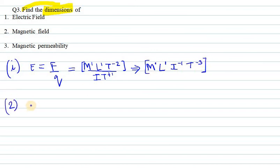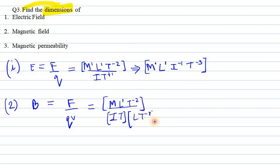Now we need to find for the magnetic field. Magnetic field can be defined as B equals F over Q dot V. F again can be written as M L1 then T minus 2, and Q can be written as I and T, and V can be written as L T raise to power minus 1.